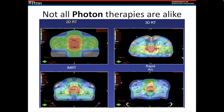Now there's the ability to do that with arcs to speed up treatment. In one or two arcs, we can treat patients from basically 180 degrees, getting very conformal treatment plans that give very little dose outside of the target region and very high dose to the target region, with a rapid gradient of dose fall-off right outside of where we're trying to treat.